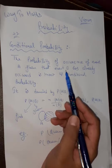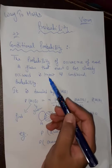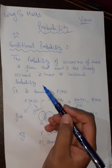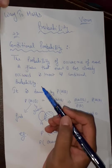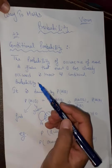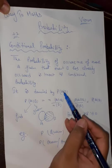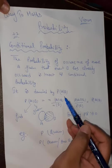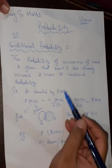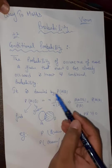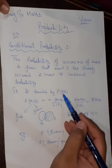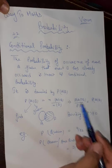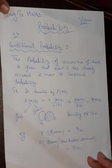Finding the probability of event A given that event B has already occurred — that is known as Conditional Probability. It is denoted as A over B, written as A slash B, meaning P(A|B). We are always finding the probability of event A given that event B has already occurred.